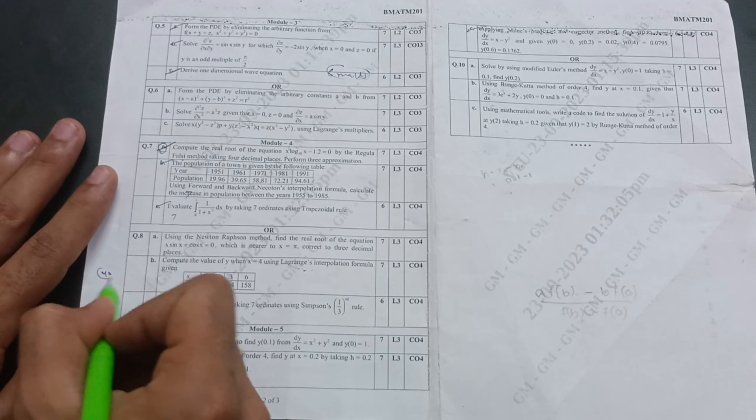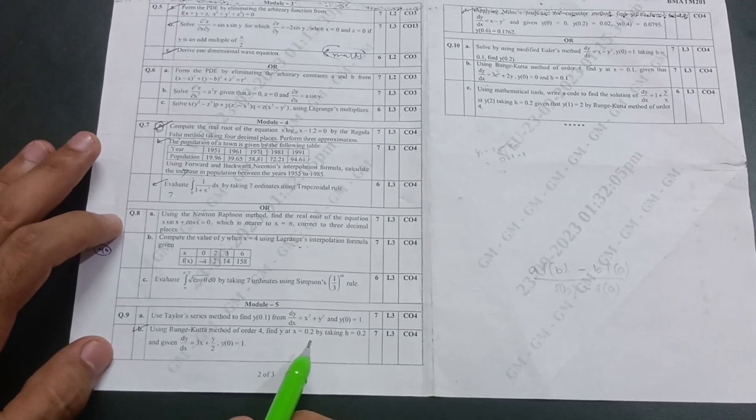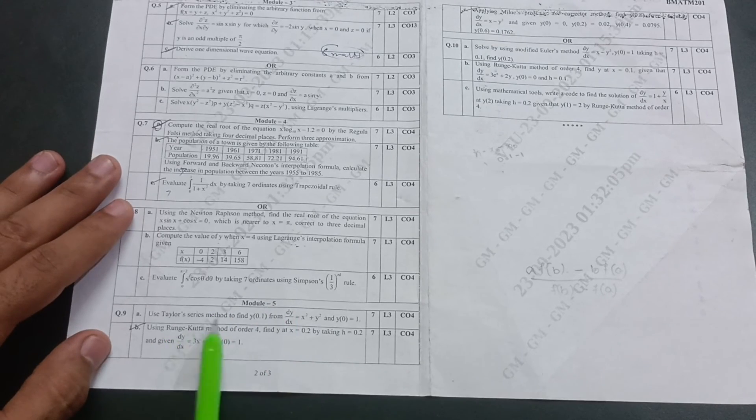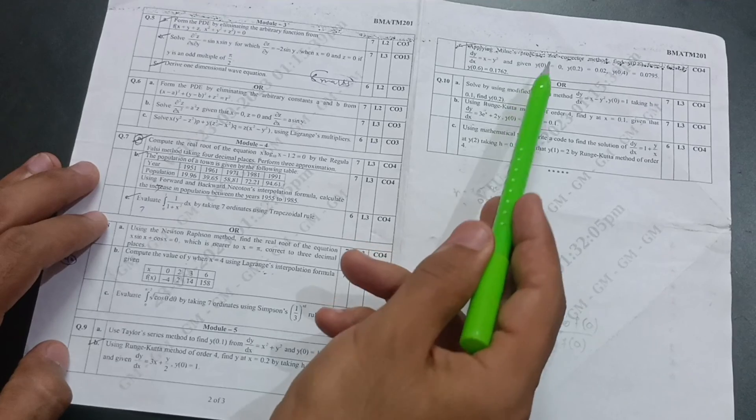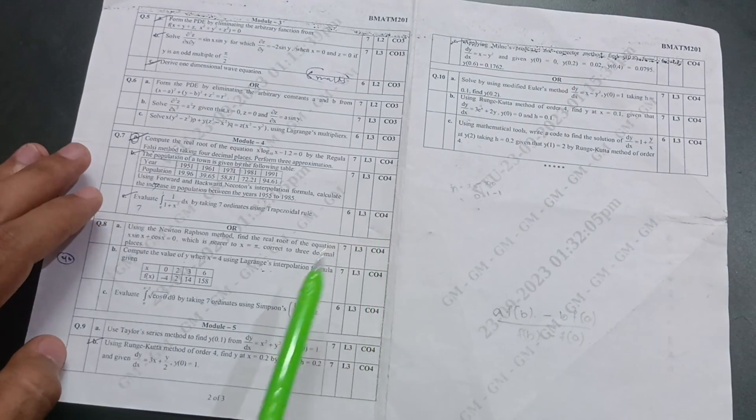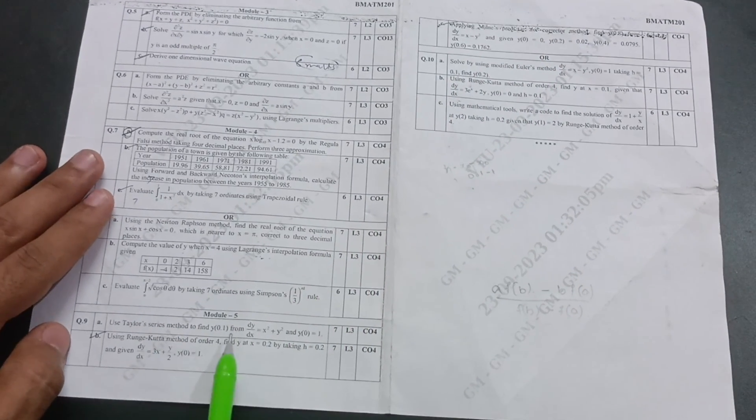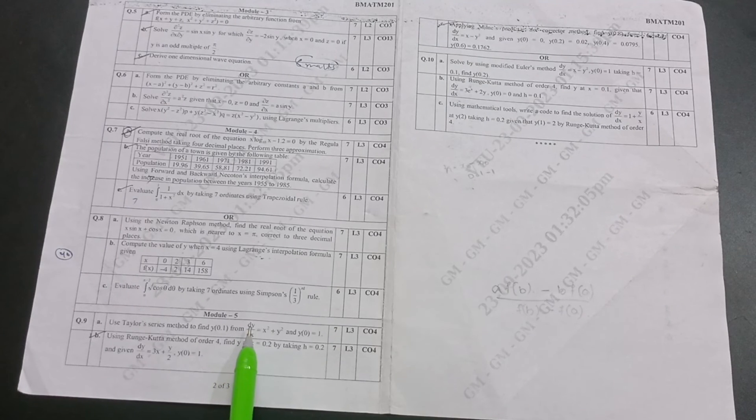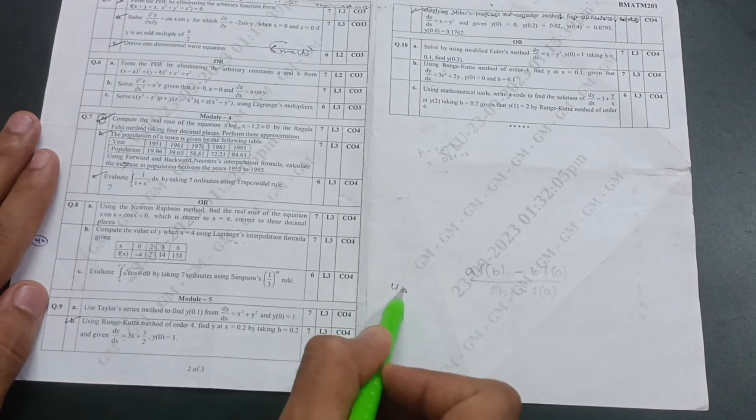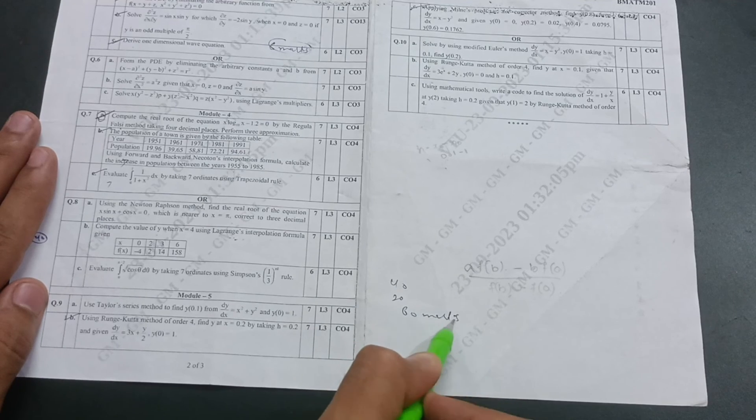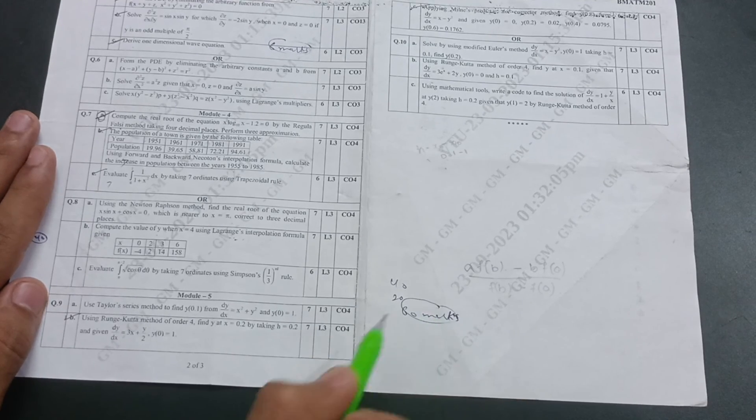Next, module 5, you have to prepare fully and it is easier: Taylor series, Runge-Kutta method, and applying Milne's predictor-corrector formula. I have already made videos for these three topics. I will share the links in the description box. It is easy explanation, so you can easily get 20 marks from this module. So 40 plus 20, that is 60 marks from all modules if you just cover these topics which I mentioned.